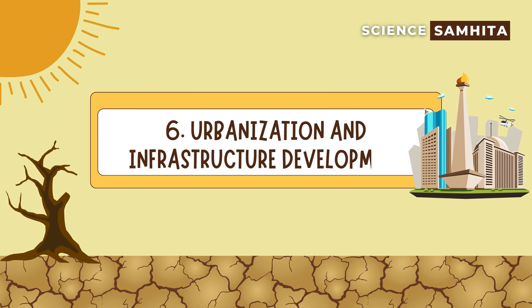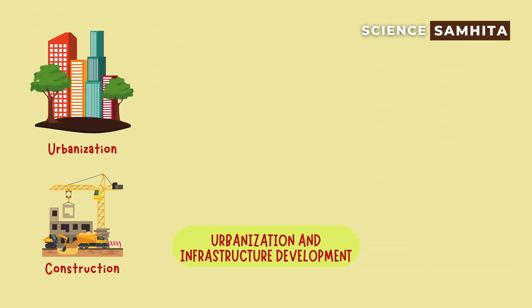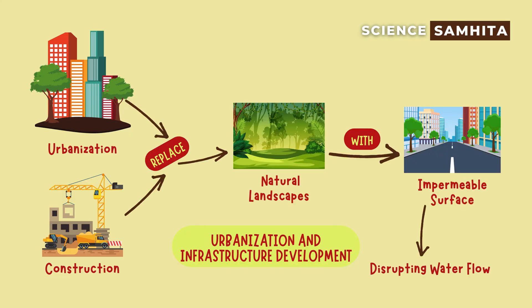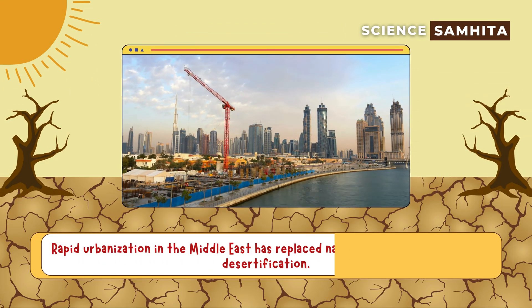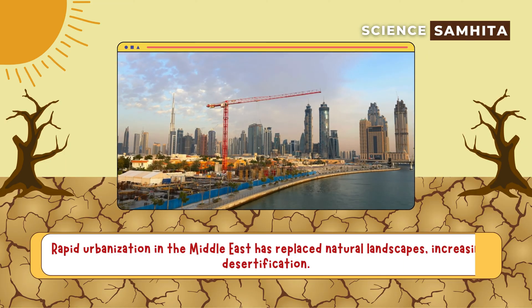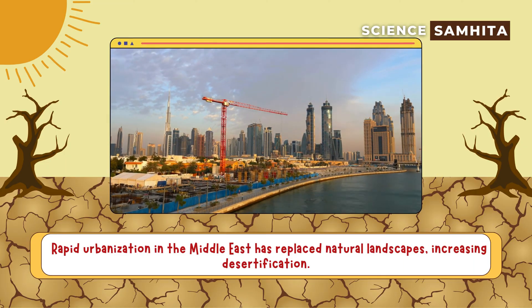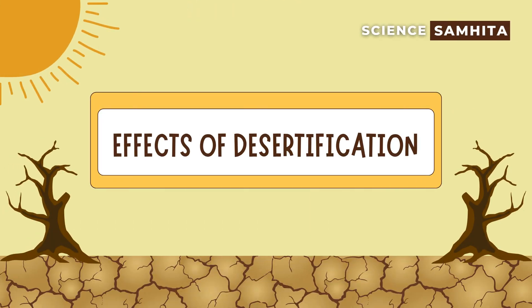Sixth, urbanization and infrastructure development. Urbanization and construction replace natural landscapes with impermeable surfaces, disrupting water flow. For example, rapid urbanization in the Middle East has replaced natural landscapes, increasing desertification.